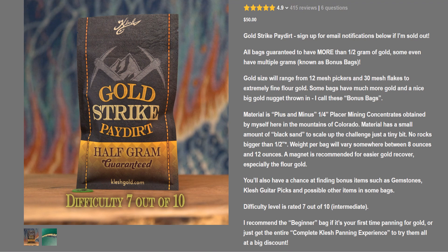It says the gold size will range from 12 mesh pickers and 30 mesh flakes to extremely fine flower gold. Material is plus and minus quarter inch, plaster mining concentrates from Colorado. I've actually seen Shane's videos where he goes out and gets where his concentrates for his paydirt. They are genuine river concentrates, and you'll see that when I open this up. And other than that, you'll have a chance at finding gemstones and potentially a pick.